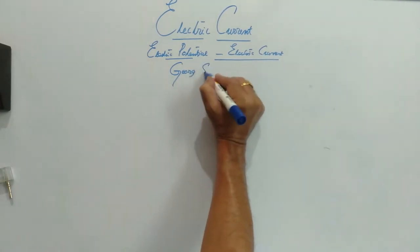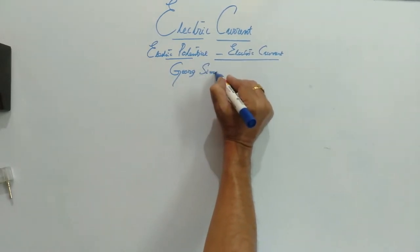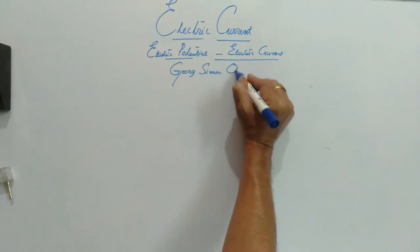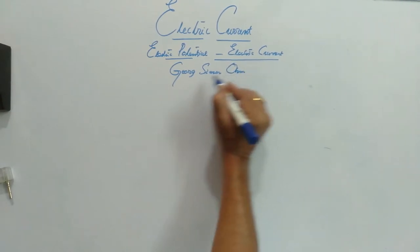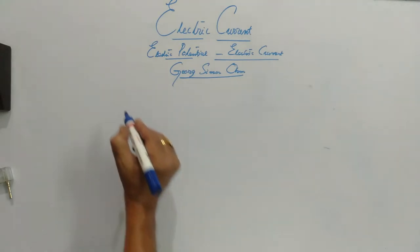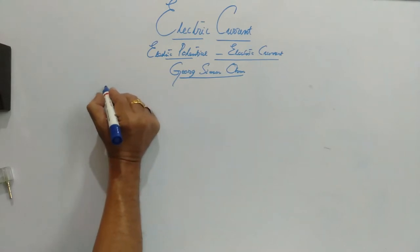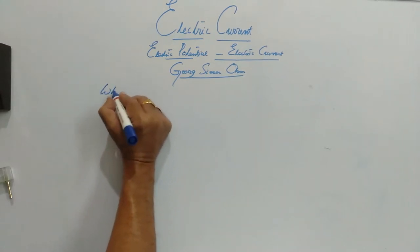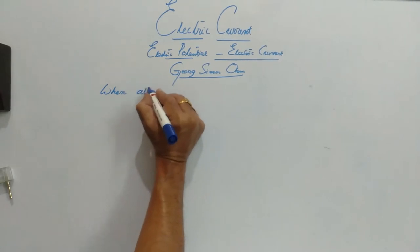George Simon Ohm, a German physicist, has studied a lot with the electrochemical cell developed by Alessandro Volta, and he has come up with a nice conclusion that when all the physical factors